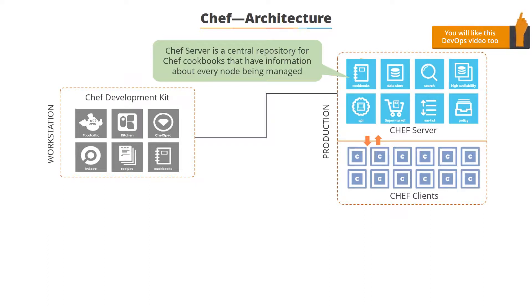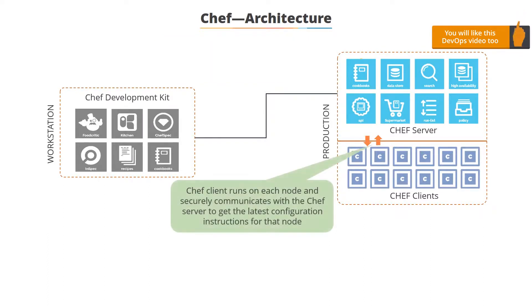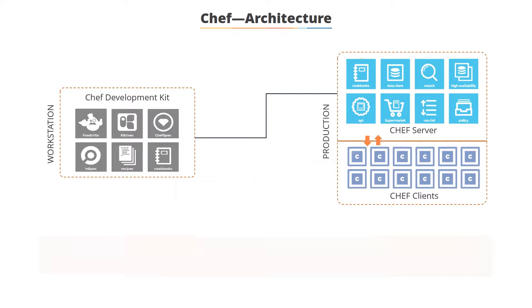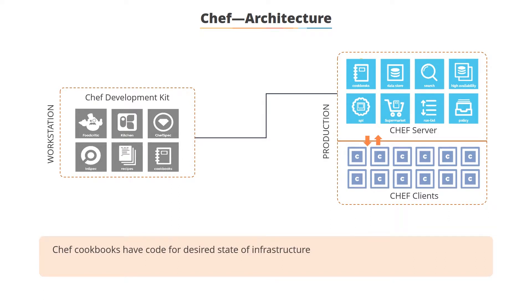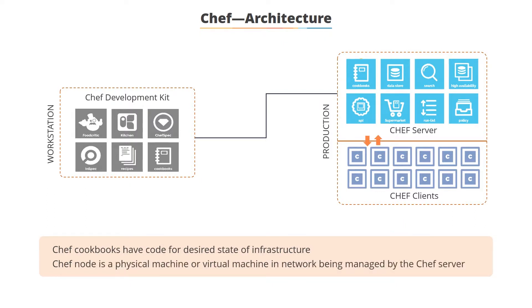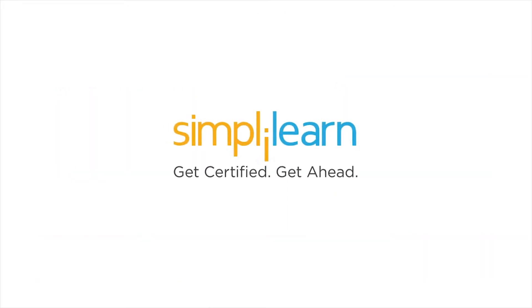The Chef client runs on each node that the server is managing, and the client securely communicates with the Chef server to get the latest configuration instructions for that particular node. These nodes could be web servers, database servers, or app servers. Chef cookbooks have the necessary code for the desired state of the infrastructure, and a Chef node could be a physical machine or a virtual machine in a network being managed by the Chef server.